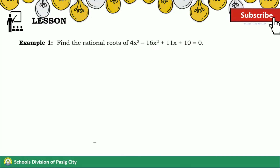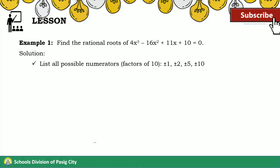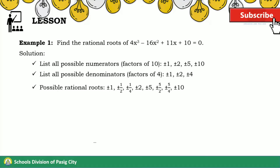Let us have Example 1. Find the rational roots of 4x³ − 16x² + 11x + 10 = 0. For the solution, first list all possible numerators coming from the factors of our constant term, which are ±1, ±2, ±5, and ±10. Next, list all possible denominators coming from the factors of our leading coefficient, which are ±1, ±2, and ±4. Dividing the factors of the constant by the factors of the leading coefficient gives us the list of possible rational roots.